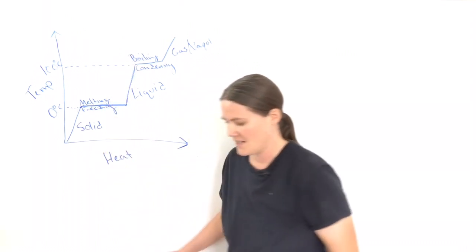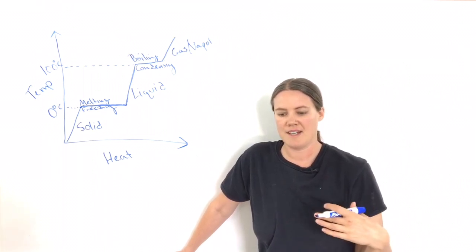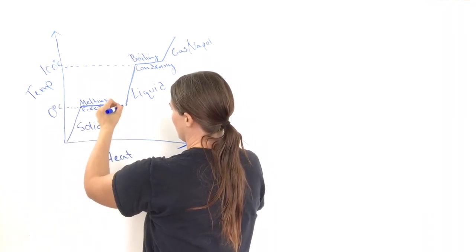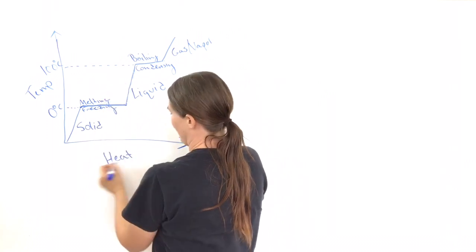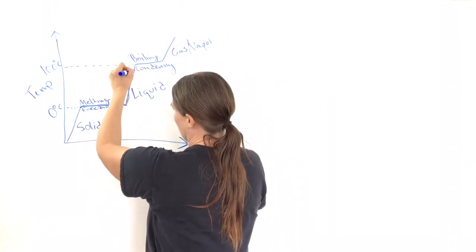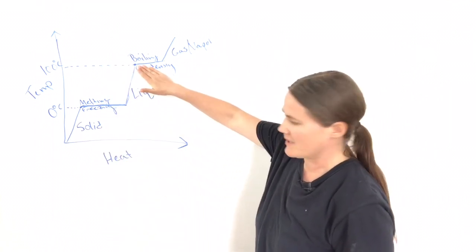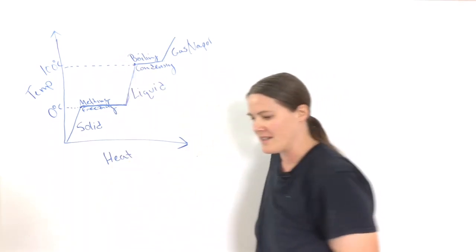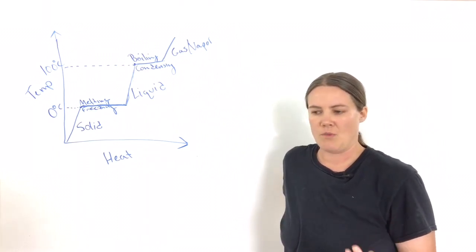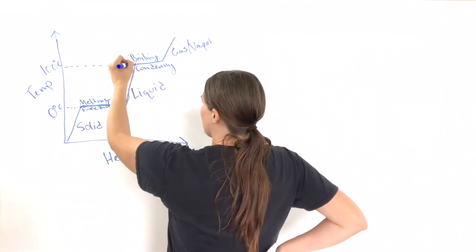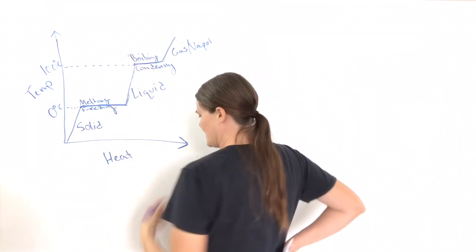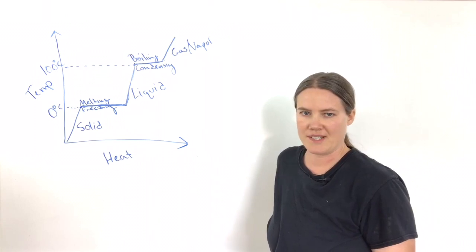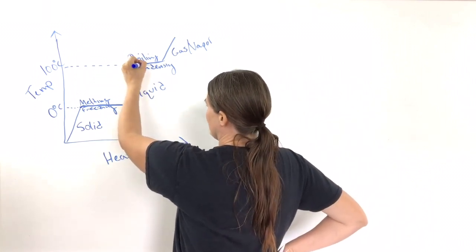Once your ice is melted completely and you only have liquid, as you continue to add heat and increase the temp, your temperature will start to increase. But then, once it reaches 100 degrees Celsius, it'll start boiling and vaporizing. At this point, you're going to have a mix of liquid water and vapor water. While it continues to boil — as long as you still have liquid water — the temperature is not going to change. Your temperature while water is boiling stays at 100 degrees Celsius, even as you continue to add heat.